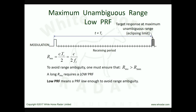To guard against range ambiguity, the maximum unambiguous range must exceed the maximum detection range of the radar — that is, the maximum possible range at which very large targets or powerful clutter returns could ever be detected. Long detection ranges demand even longer maximum unambiguous ranges, and hence ever lower PRFs. This leads to the concept of a low PRF, simply defined as a PRF low enough to avoid range ambiguity. This was historically how early pulsed radars were designed, and low PRF modes are still used today. One cannot define a general numerical frequency limit for low PRF, since this is dictated by the radar's detection range.